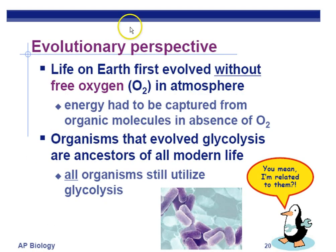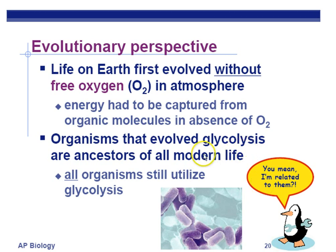From an evolutionary perspective, life on Earth first evolved without free oxygen. We know this because the oldest layers of rock on this planet have no rust — no oxidized iron — and iron only oxidizes in the presence of oxygen. That's why red rocks are red: because of the rust in the rocks, and that's what geologists study — where geology supports biology. Organisms that evolved glycolysis are the ancestors to all modern life. Glycolysis is a common process to all living things, and the mitochondria builds on this earlier evolutionary process. You are related to bacteria, albeit very distantly — about two billion years ago.